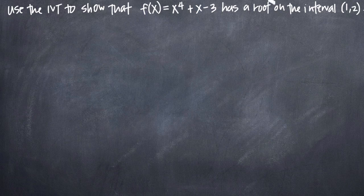The first thing we want to make clear is that the root of a function is a point at which the graph of the function crosses the x-axis. In order to use the intermediate value theorem to show that this function crosses the x-axis between 1 and 2,